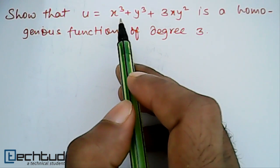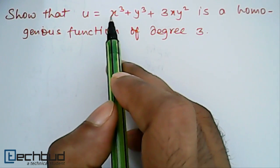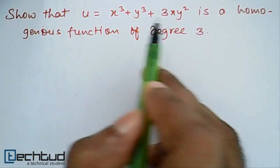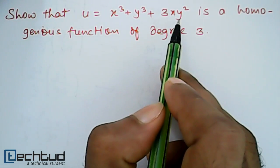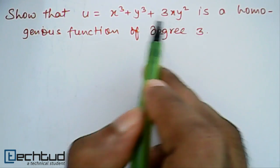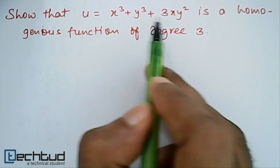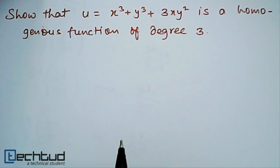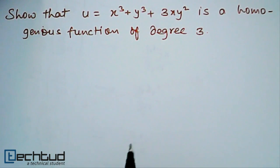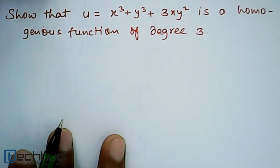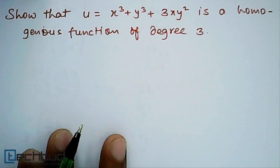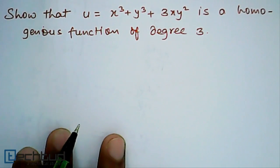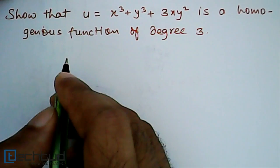It is very clear that each term has degree 3 — equal degree. So this is a homogeneous function, but we have to verify it using Euler's theorem and see whether the Euler's theorem we have studied is working properly.